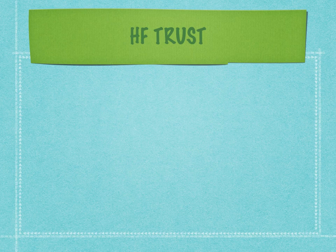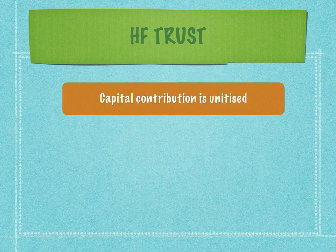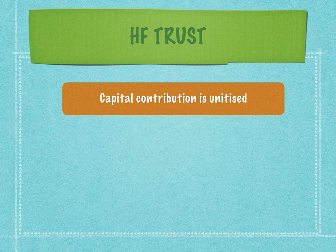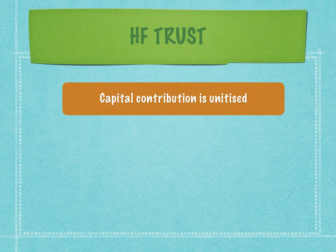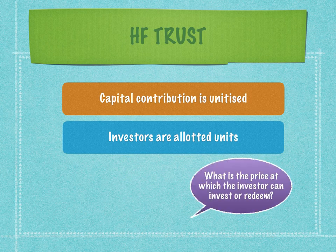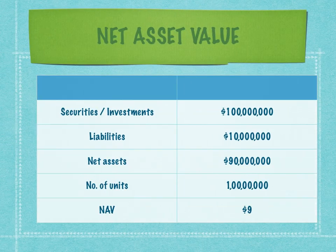Sometimes a hedge fund, especially offshore hedge funds in the United States, are structured like a trust. The trust equivalent is the mutual fund in India — the capital contribution is unitized, and that is the only similarity between a mutual fund and a hedge fund. In a trust structure, there is no LP/GP situation — there is only one asset management company which runs the hedge fund. Investors are allocated units as per their contribution, and the price at which they can invest or redeem is the NAV, or net asset value.